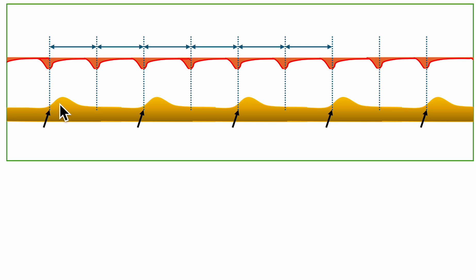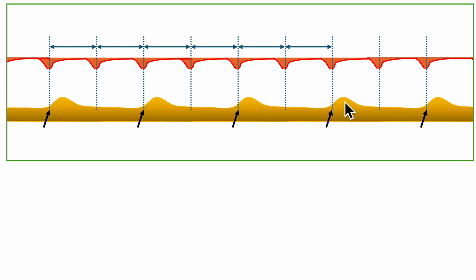This atrial contraction is coming with a fixed interval with the ventricular beat, meaning they are associated with each other. Alternate atrial beats are associated with ventricular beats at the same coupling interval — the time from atrial to ventricular contraction. This gives us a clue that this is a 2:1 AV block.